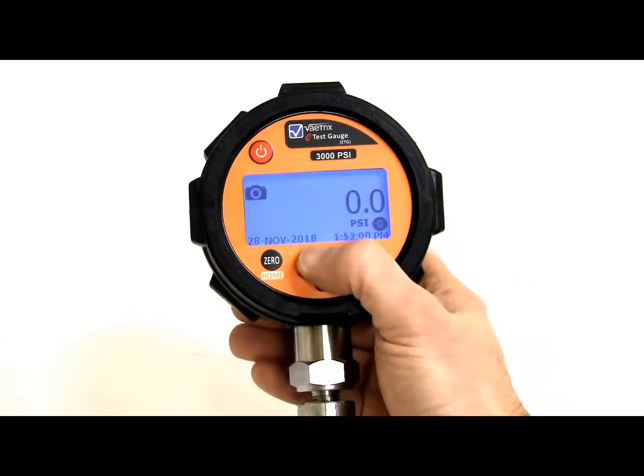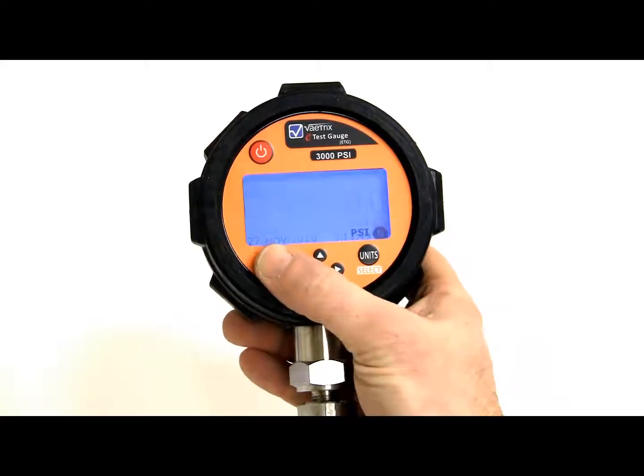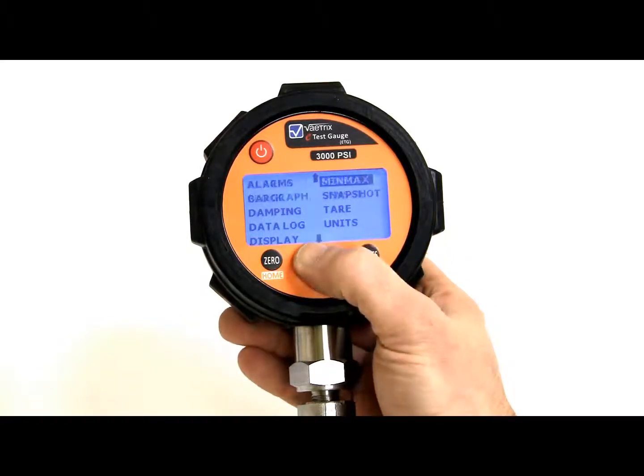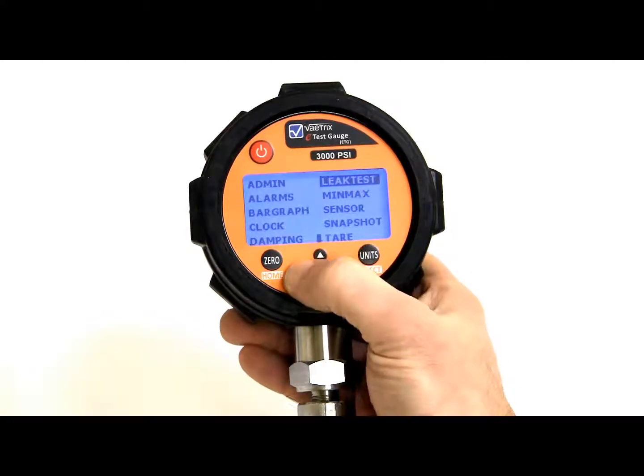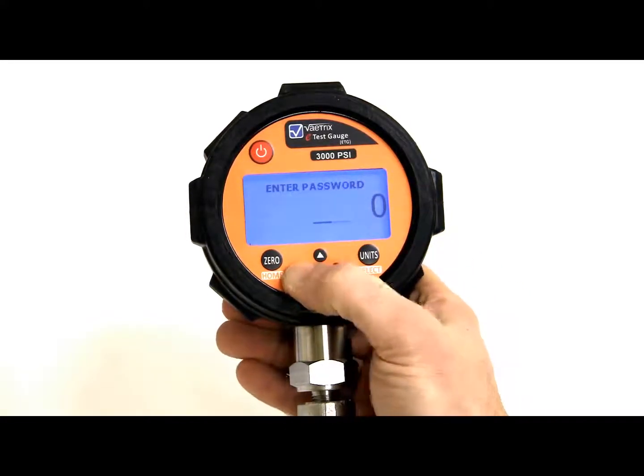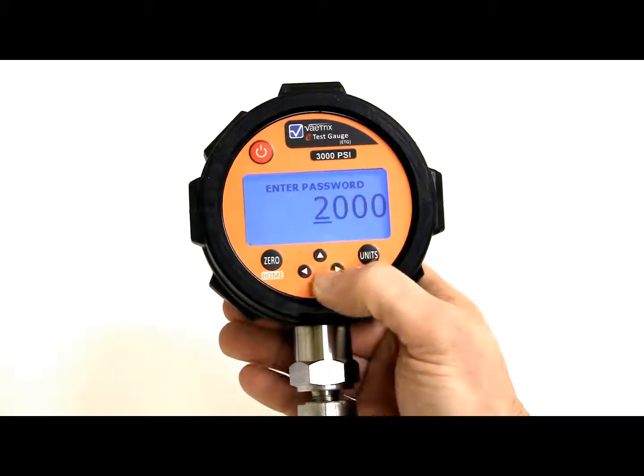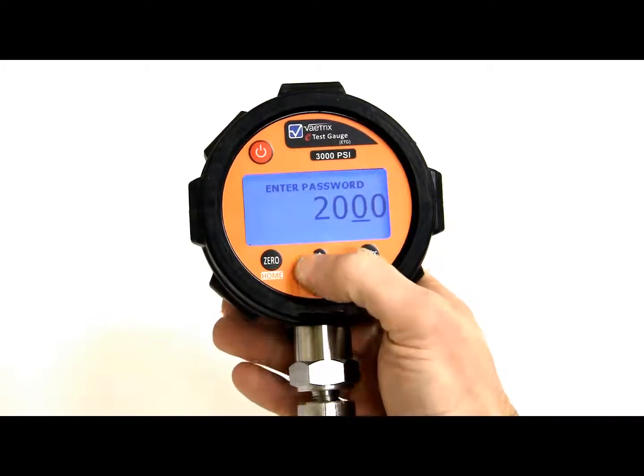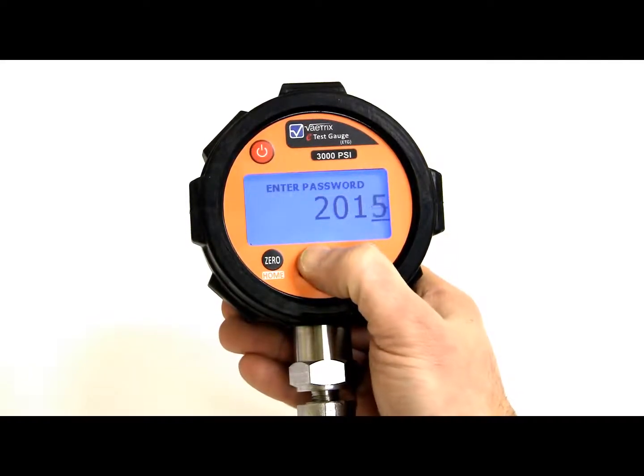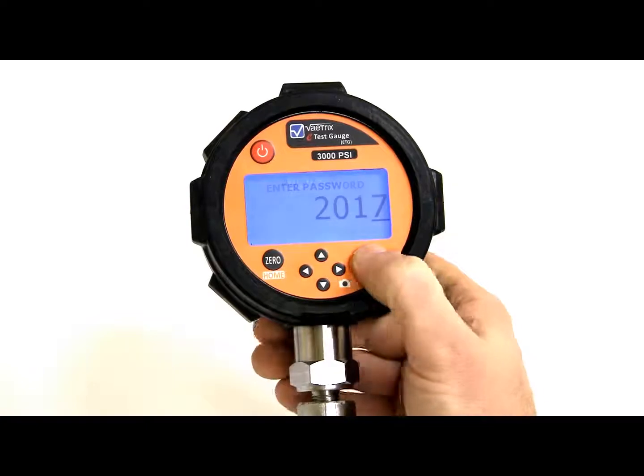Alright, so let's go back to home, let's dive in to admin. So, admin, we give you the capability to lock out certain menus or certain features, and I set the password to 2017. So, we'll set that, hit select.